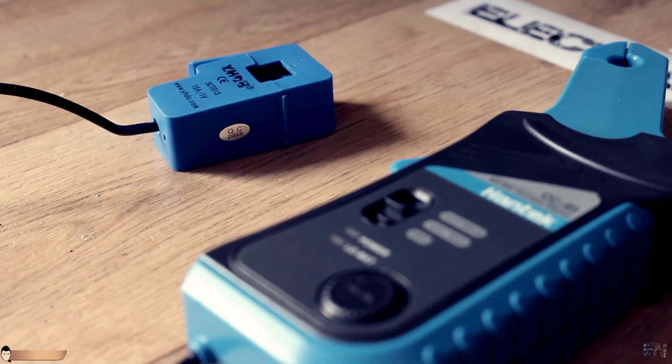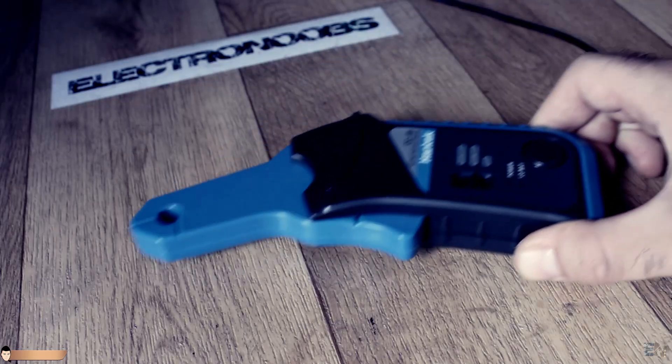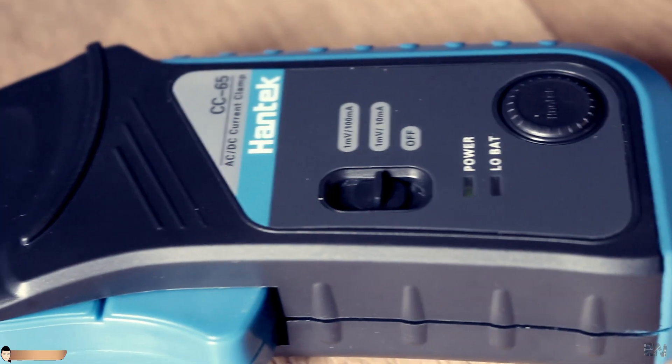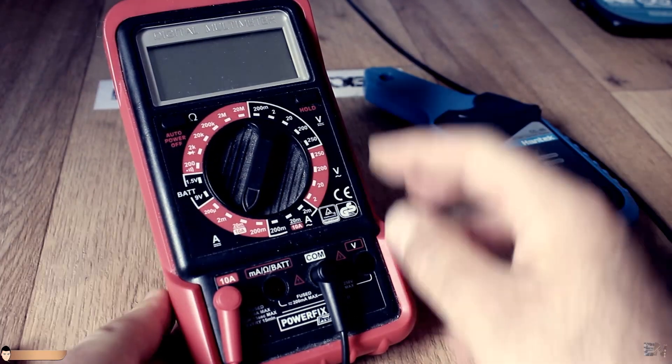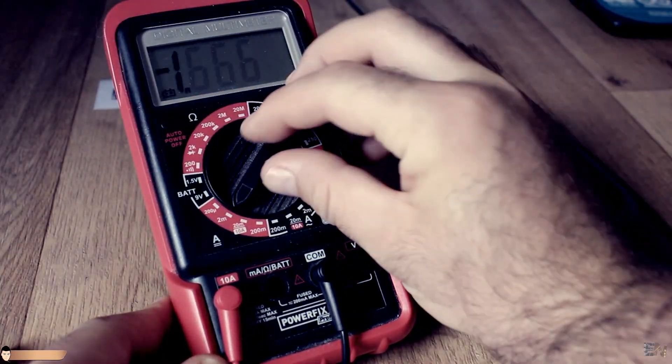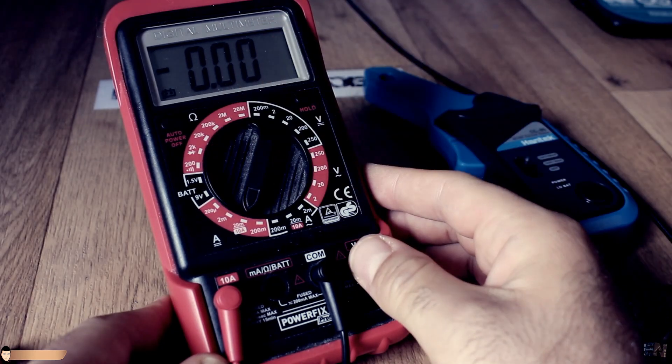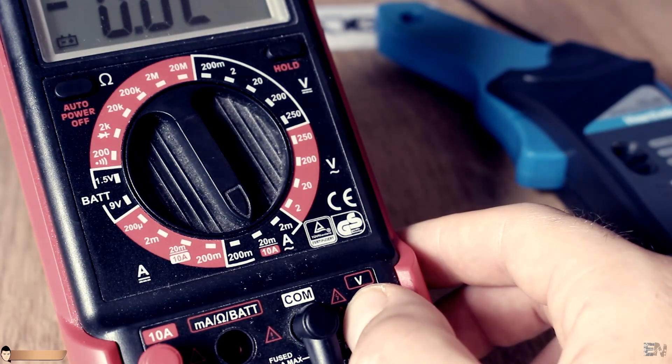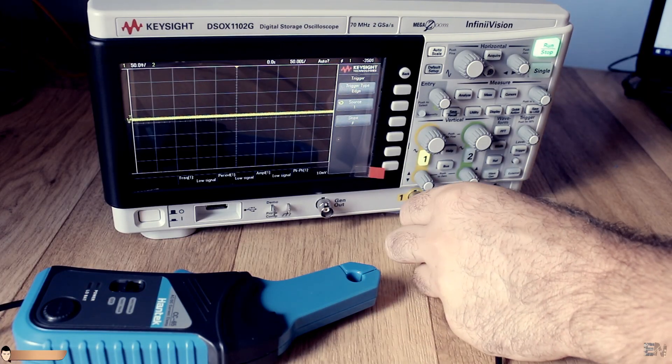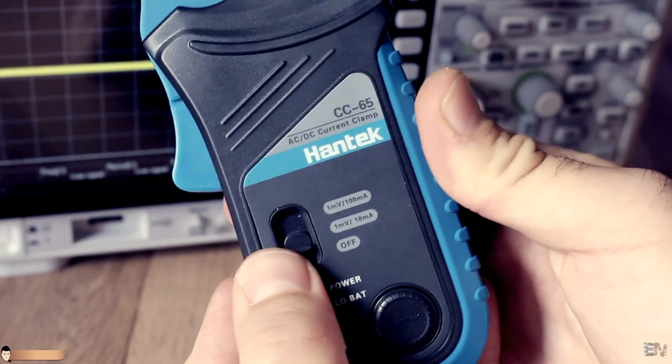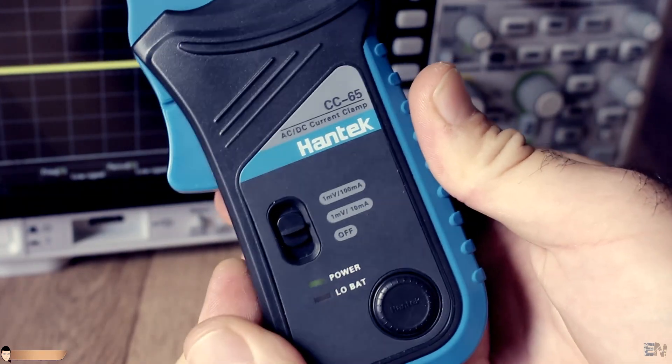To understand that, let's first take a look at my handheld current clamp that I've just received. It is quite a useful tool. Probably, to measure constant current, I would use my multimeter. But in case of an oscillating current value, you will probably need to see the signal on your oscilloscope. For that, I plug the clamp into my oscilloscope, turn it on and select the scale.